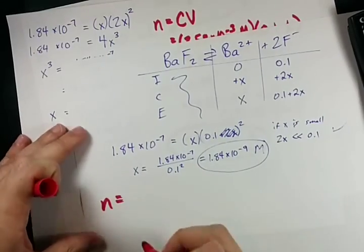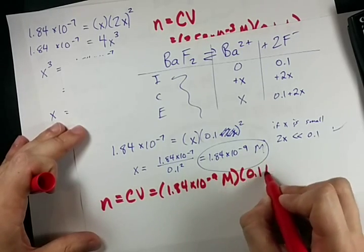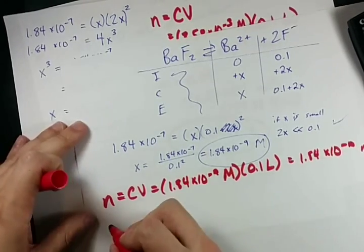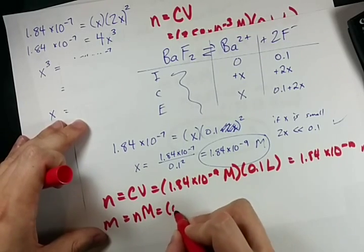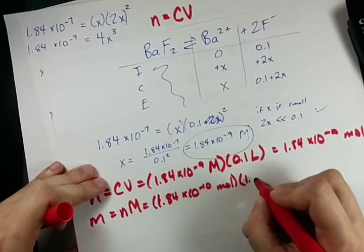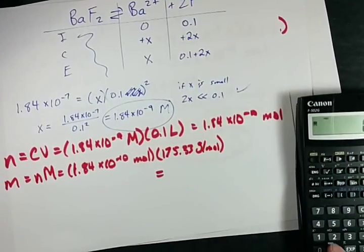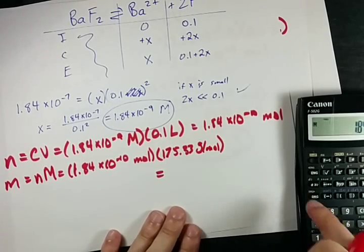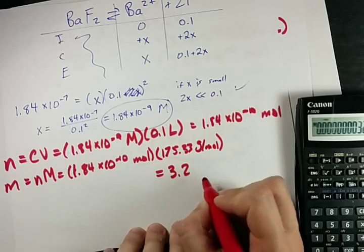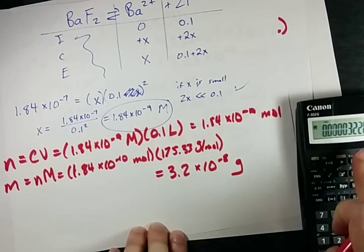The number of moles that I'll be able to dissolve is concentration times volume. 1.84 times 10 to the negative 9 moles per liter times 0.1 liters is 1.84 times 10 to the negative 10 moles. And the mass that I can dissolve is the number of moles, 1.84 times 10 to the negative 10 times 175.33. 1.84 times 10 to the minus 10 times 175.33, it's 3.23 times 10 to the minus 8 grams.